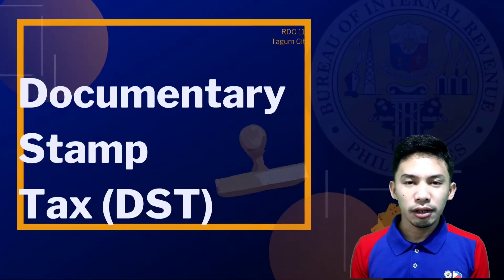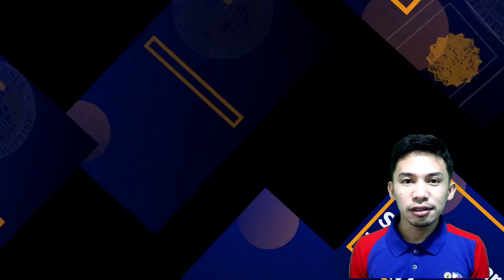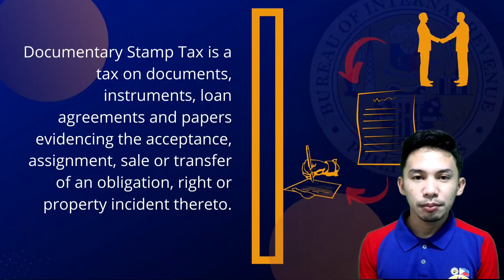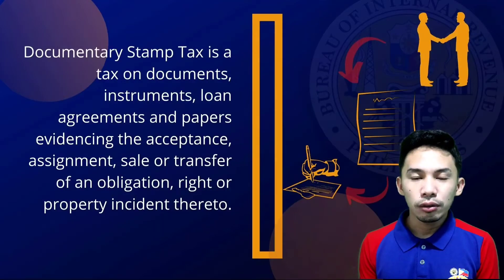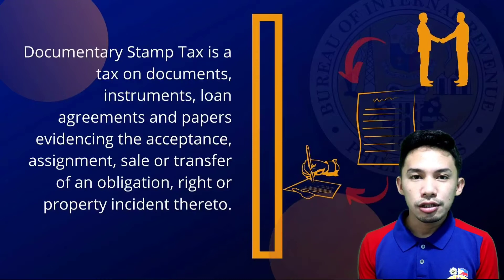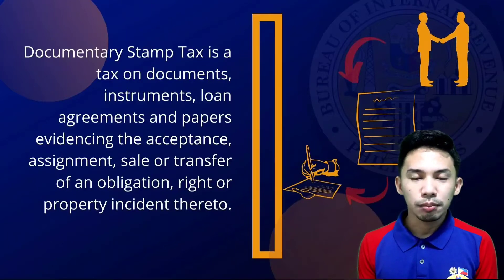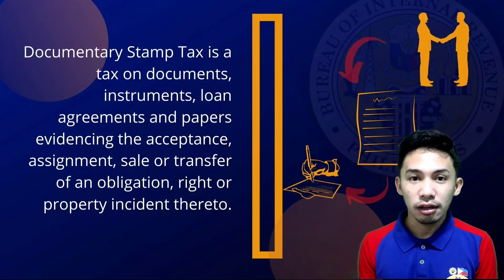including Documentary Stamp Tax, which I will be discussing today. The Documentary Stamp Tax, or DST, is a tax upon documents, instruments, loan agreements, and papers evidencing the acceptance, assignment, sale or transfer of an obligation, right or property incident thereto, and in respect of the transaction so had or accomplished. The DST is in the nature of an excise tax — it is levied on the privileges exercised by a person to enter into contracts and/or execute any specific instruments.